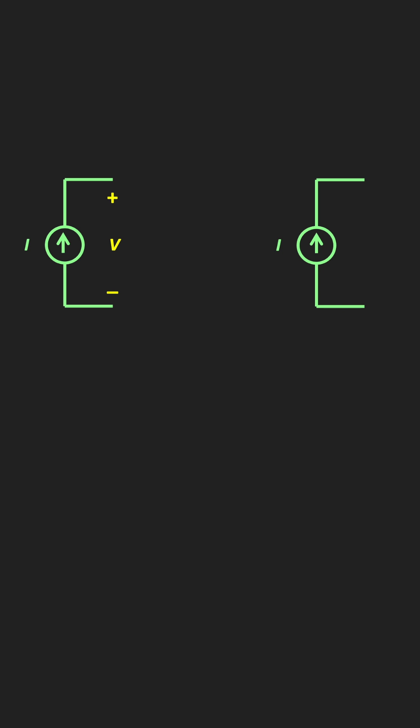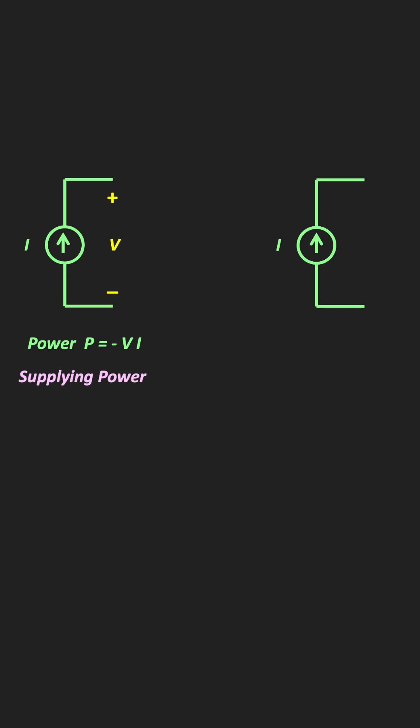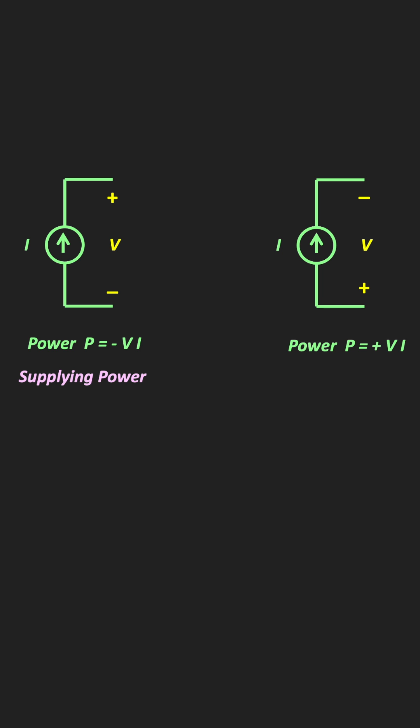Similarly, for the current source, if the voltage across the current source is positive, then the power is negative. In this case, the current is leaving the positive terminal of the voltage, and that is why the power is negative and the current source is supplying the power. On the other hand, if the current is entering the positive terminal of the voltage, the power is positive and the current source is absorbing the power.